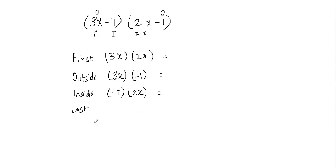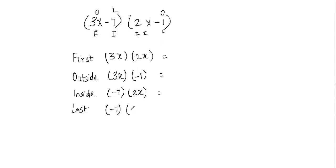Now the last terms of each binomial. From the first binomial the last term is negative 7, and from the second binomial the last term is negative 1. So we're going to multiply negative 7 and negative 1.